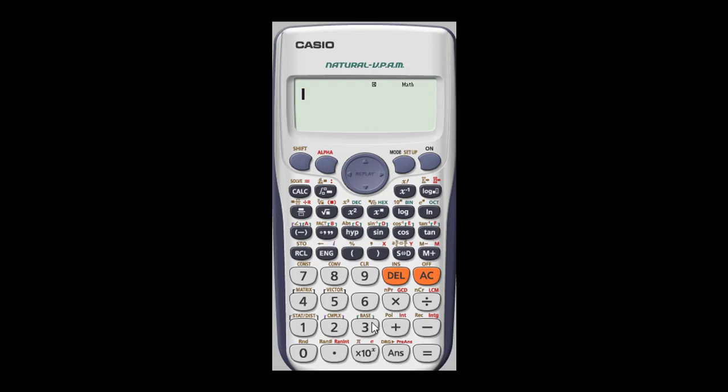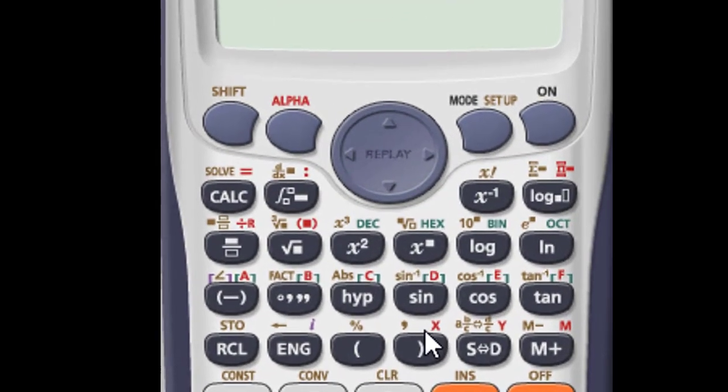Red colored labelings as you can see here. For instance, look at the X, Y, M, F, E, D, C, B and A. We can only access those keys by also pressing the alpha key.